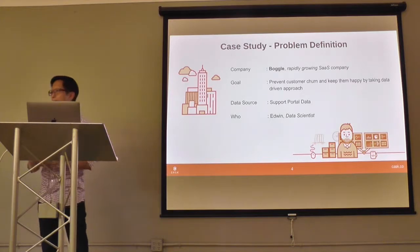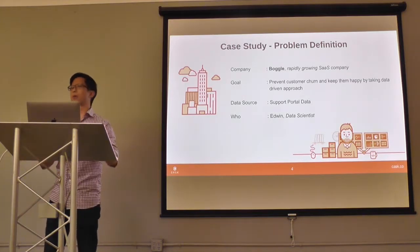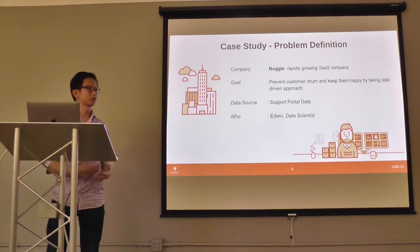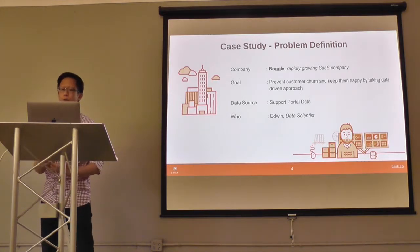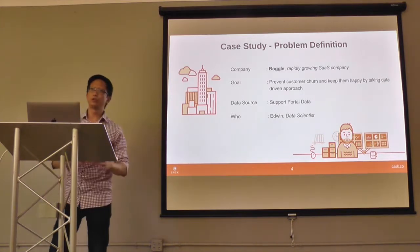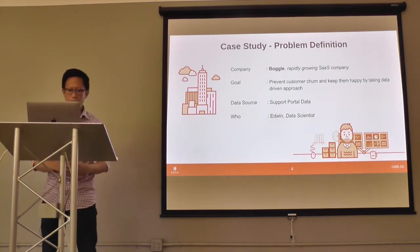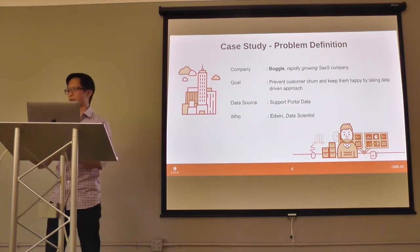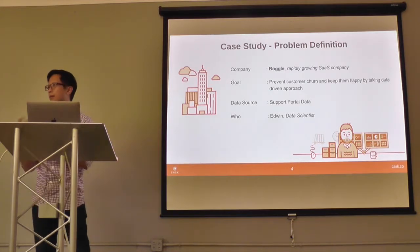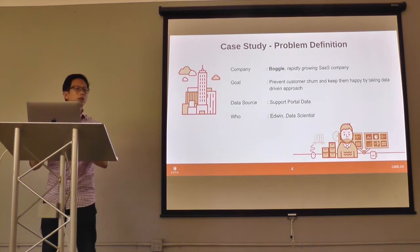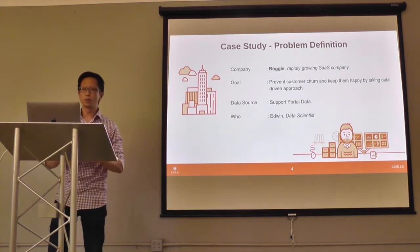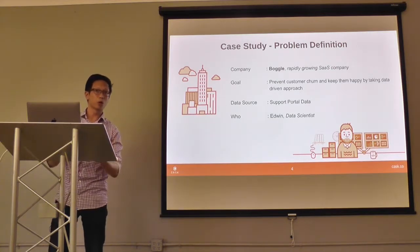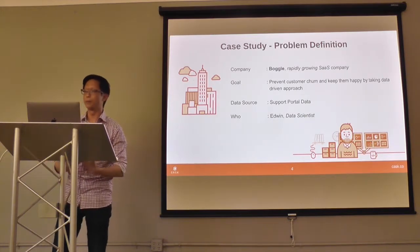We'll be looking at a fictitious company named Bottle — a rapidly growing SaaS company with thousands of customers, adding thousands more every week. The goal for Bottle is to prevent customer churn and keep them happy using a data-driven approach. They have a data support portal where the company interacts with customers, where customers can ask questions, file support tickets, and things like that. Bottle asks Edwin, the data scientist, to solve this problem. While this is a fictitious company, a lot of companies are actually trying to solve this very same real big data problem.